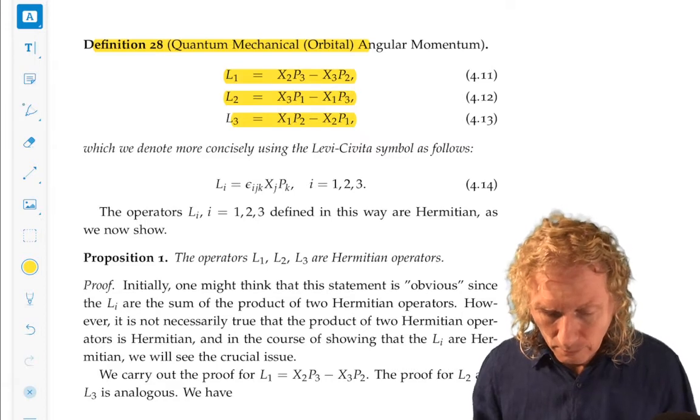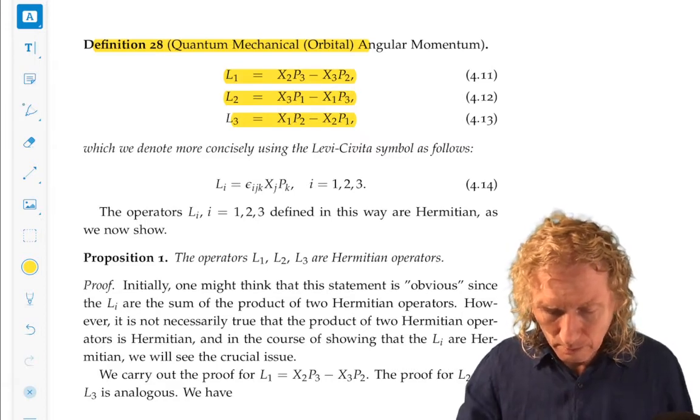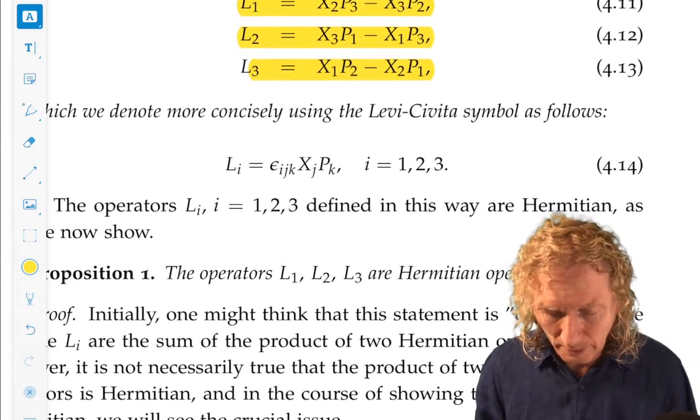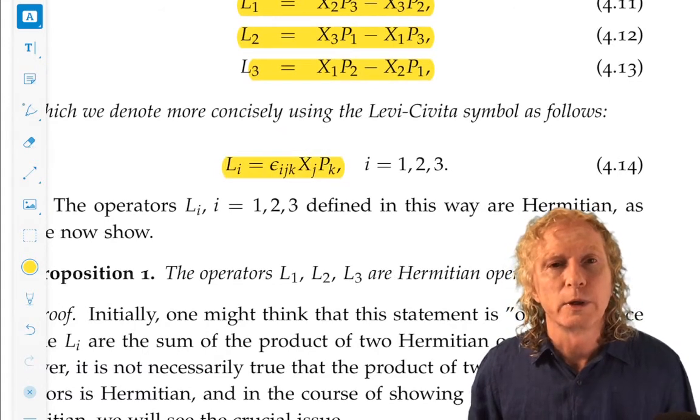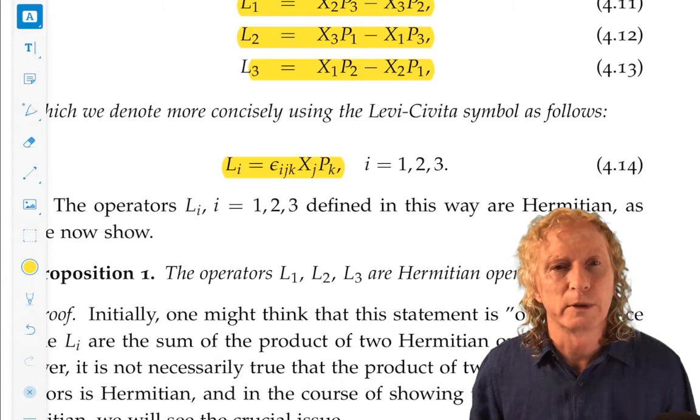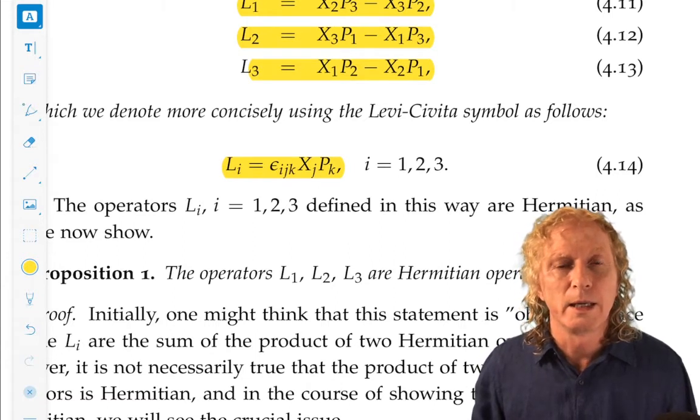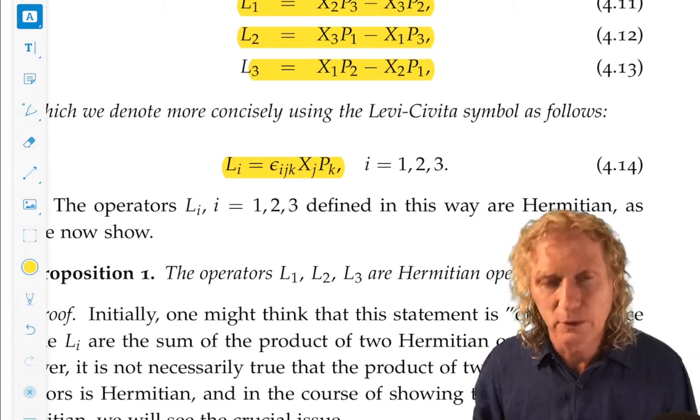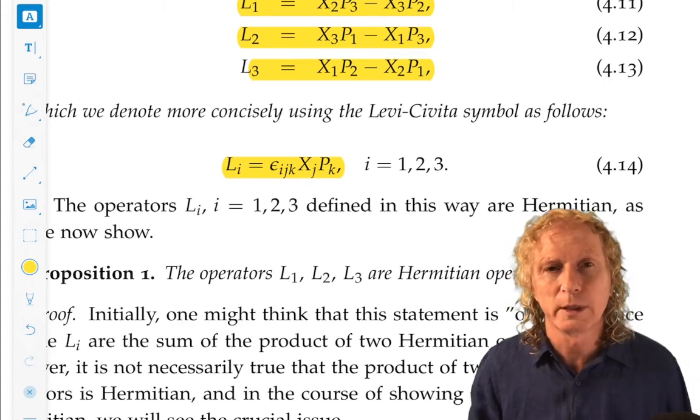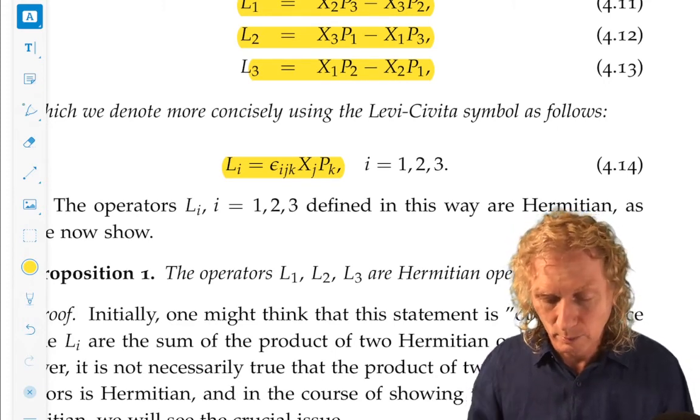Okay. Well, we can write these in this shorthand notation using the Levi-Civita symbol and the Einstein summation convention. And these are the three components of quantum mechanical orbital angular momentum.